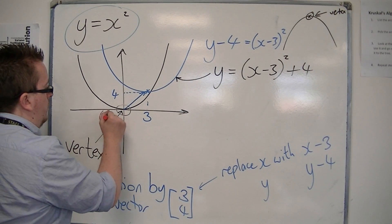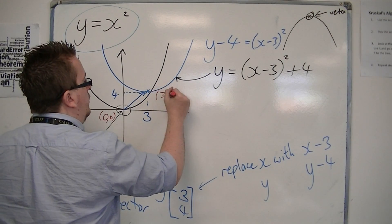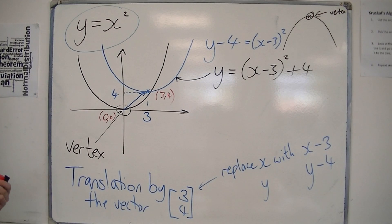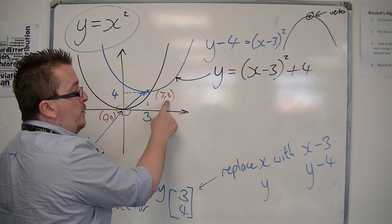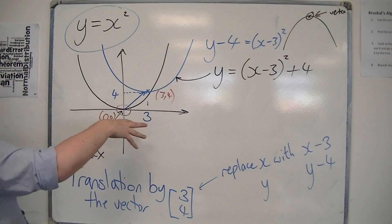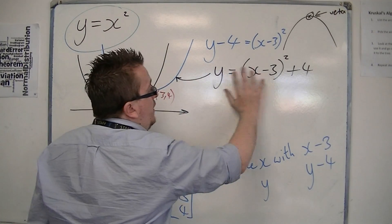So it's gone from 0, 0 to 3, 4. And you replace the x with x minus 3 and y with y minus 4, and then you can get this equation.